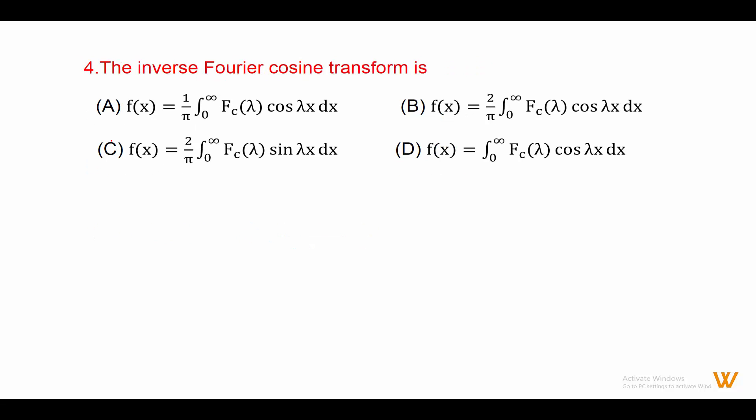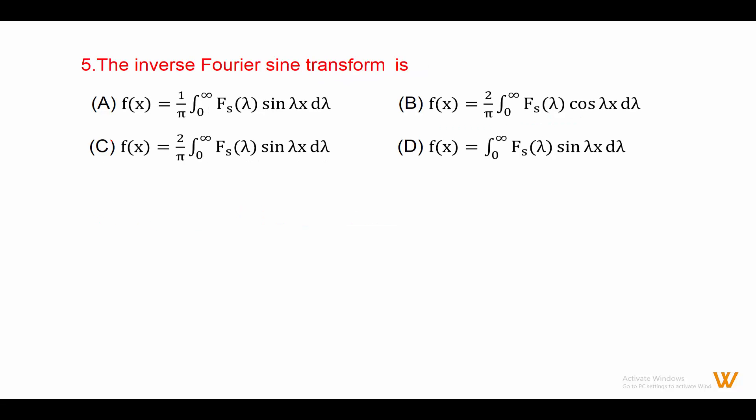Fourth: the inverse Fourier cosine transform is. Answer is option B: fx equals 2 upon pi, integration from 0 to infinity of Fc(lambda) cos(lambda x) dx.